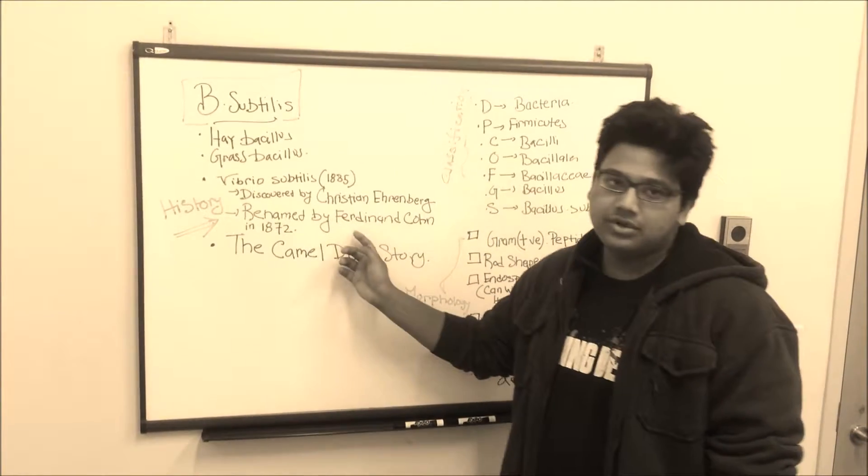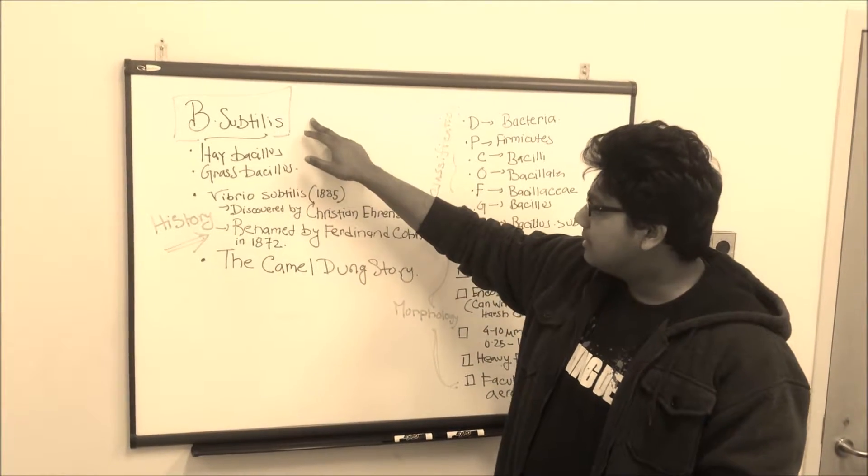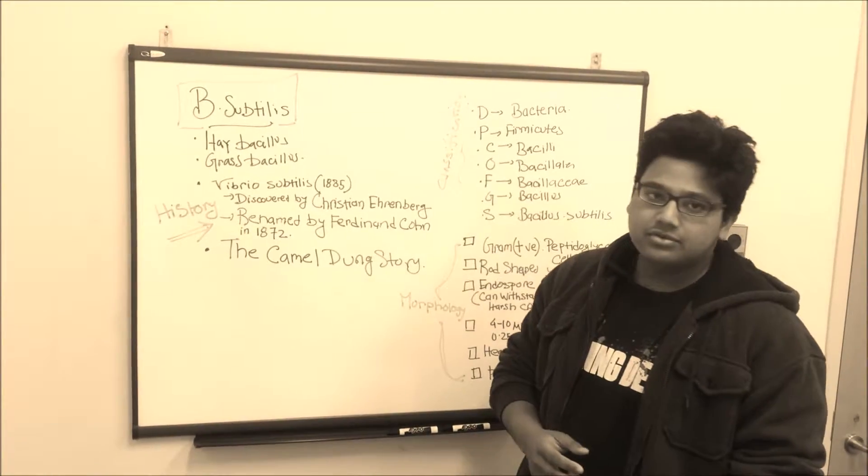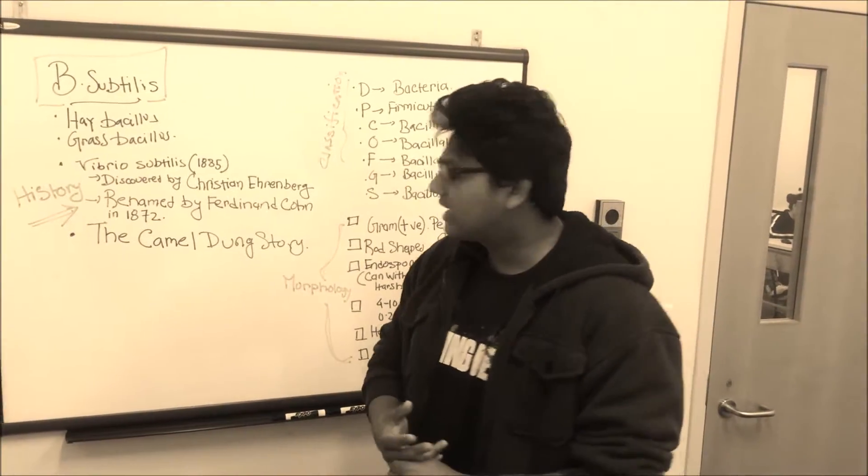Later on, it was renamed by Frederick Ferdinand Cohn in 1872 into B subtilis. Now there is a famous story behind B subtilis and I named the story the Camel Dung story.